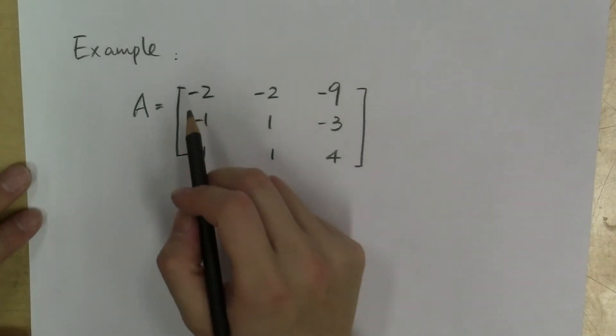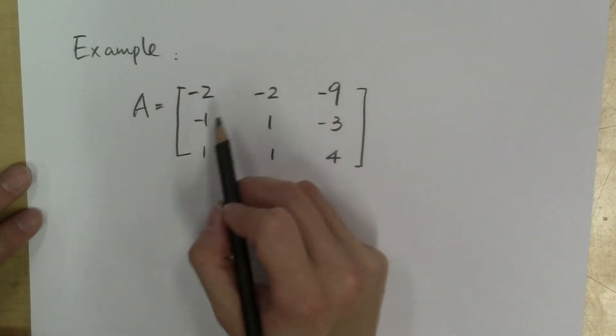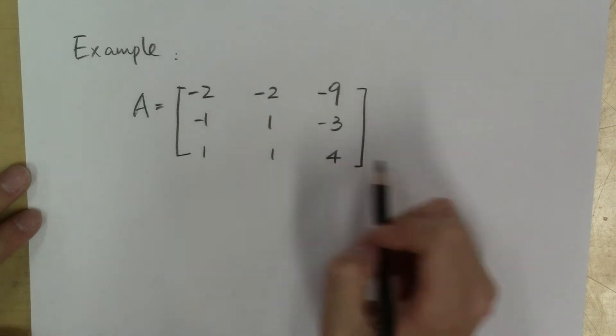And here's an example. I'm trying to find eigenvalues and eigenvectors of this 3 by 3 matrix: negative 2, negative 2, negative 9; negative 1, 1, negative 3; 1, 1, 4.